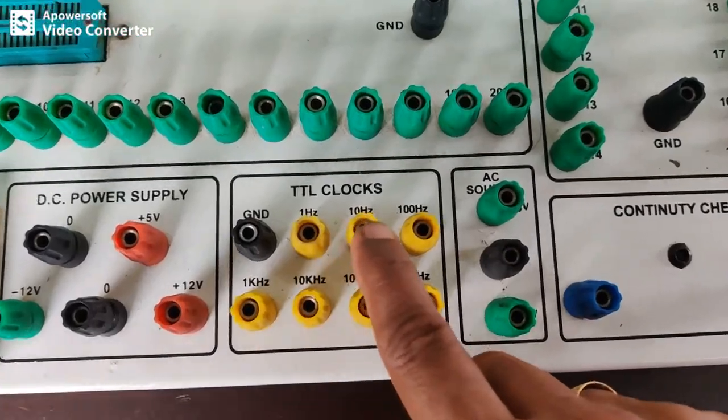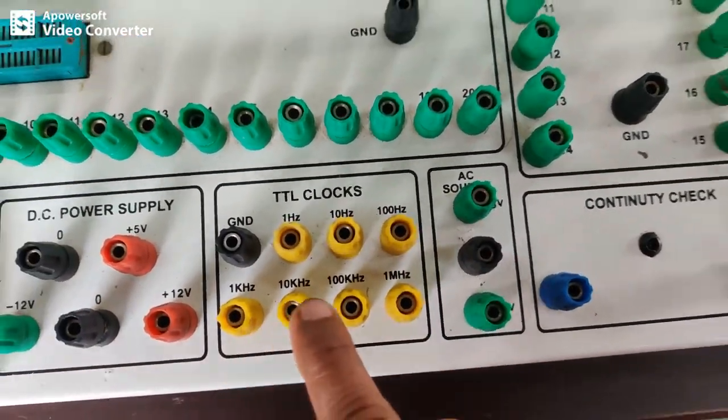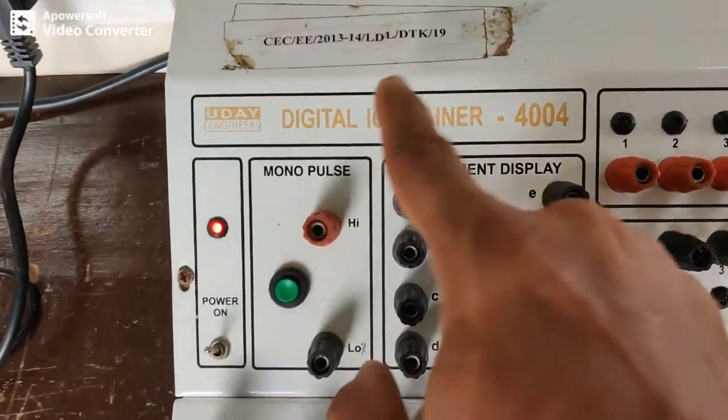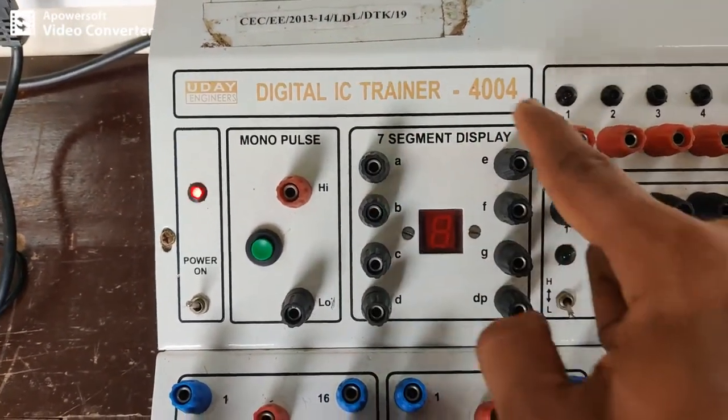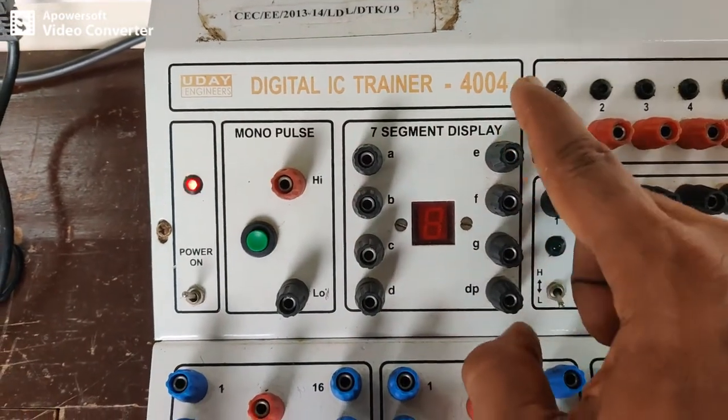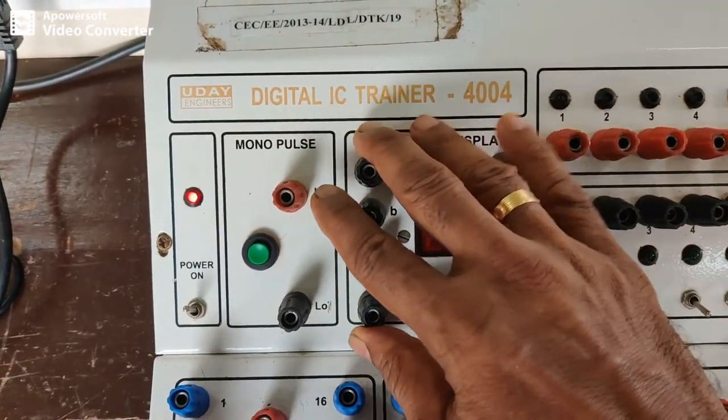From here you can give various different clock frequency to the IC, to the circuit diagram depending on the need. You can see here 1 hertz, 10 hertz, 100 hertz, 1 kilohertz, etc. The last section is something called 7 segment display. This is used to display 0 to 9, A to F. Some experiments you need to display 0 to 9, A to F, for that one we are using this one.